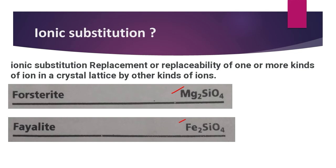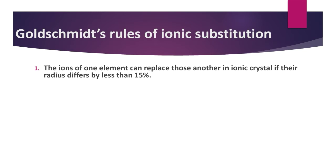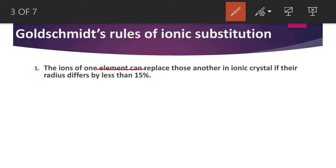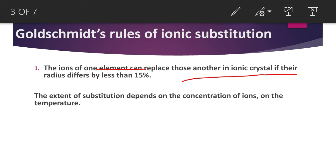Iron and magnesium can be replaced by each other due to ionic substitution. This substitution is controlled by many factors, and Goldsmith proposed some rules for it. The first rule states that ions of one element can replace those of another in an ionic crystal if their radius differs by less than 15 percent. If the difference in radius is more than 15 percent, they will not replace each other.